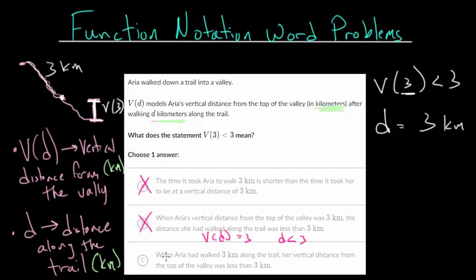But choice C should make sense. When Aria had walked 3 kilometers along the trail, so that's our D value of 3, her vertical distance from the top of the valley was less than 3 kilometers. So the vertical distance after walking those 3 kilometers was less than 3. So C would be the correct choice here.